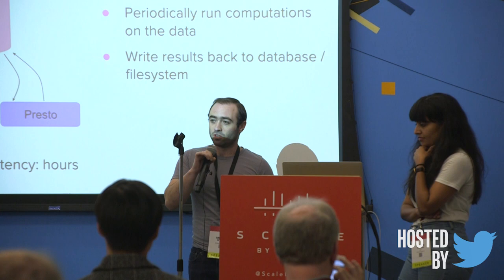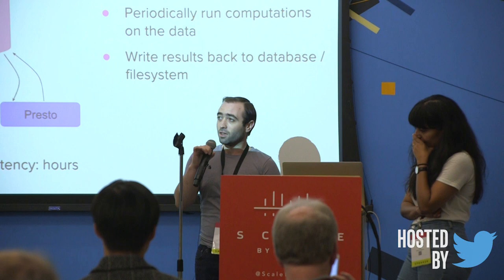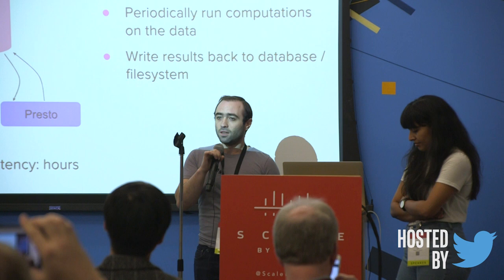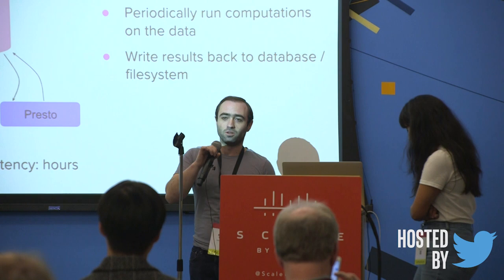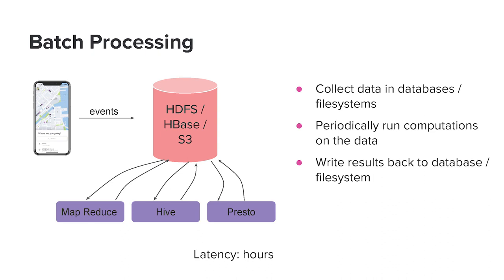As all this data comes into our system, it goes to some data store — a data lake, HDFS, S3, HBase — and then periodically users can query it using a system like MapReduce, Presto, or Hive. Maybe you have some automated system querying it every day and generating features for your ML pipelines. This works well for a lot of use cases. It's very scalable, up to petabytes of data, and it's fairly straightforward for users to use.